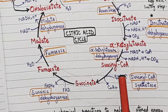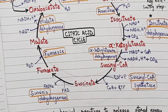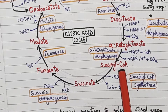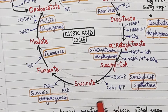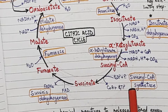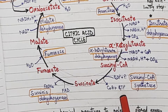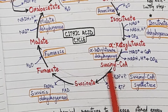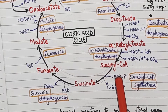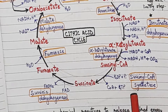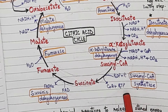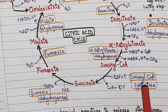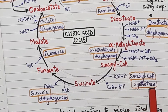Succinyl CoA is then converted into succinate. In this reaction, CoA is removed and liberated. GDP gets phosphorylated to become GTP — this is substrate-level phosphorylation. The enzyme involved is succinyl CoA synthetase.